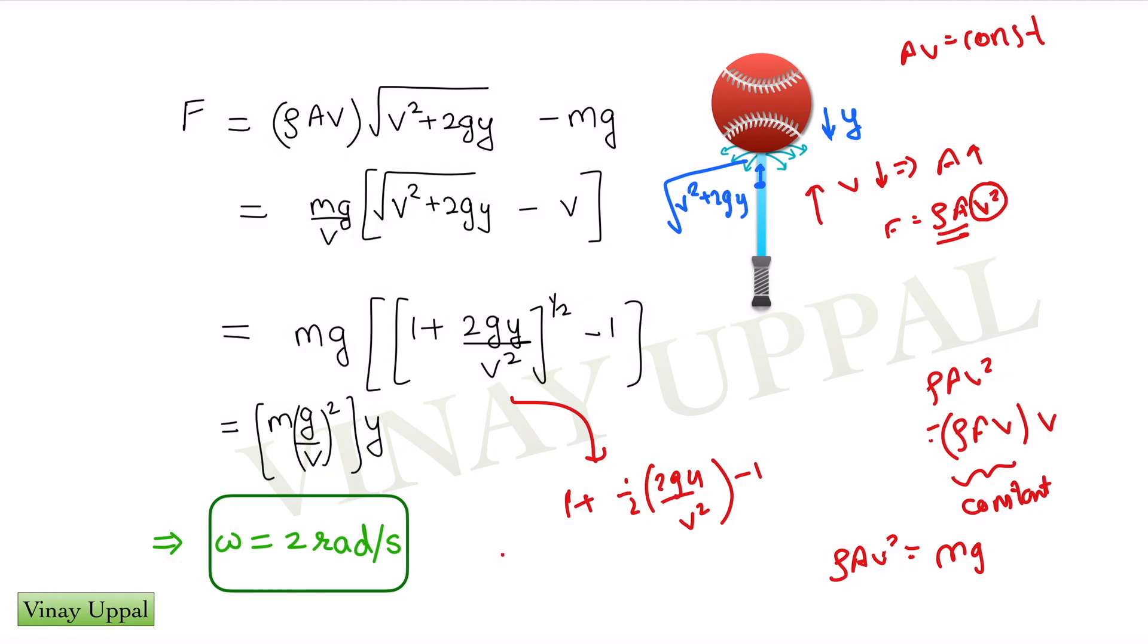My k equivalent would be the proportionality to y, so mg²/v². And then I already know ω is root k equivalent by m, the standard SHM equation. And I get ω as g/v, which will give you 2 radian per second.